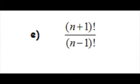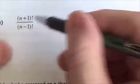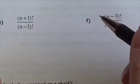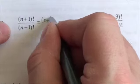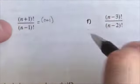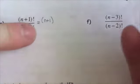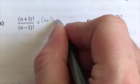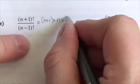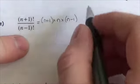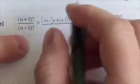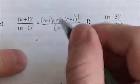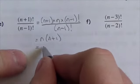Next: (n plus 1) factorial divided by (n minus 1) factorial. Clearly (n plus 1) factorial is larger, so expand it: (n plus 1) times n times (n minus 1) factorial, over (n minus 1) factorial. Those cancel, leaving n times (n plus 1), or n² plus n. Let's verify with n equals 4: 5 factorial divided by 3 factorial equals 5 times 4 times 3 factorial over 3 factorial, leaving 5 times 4 equals 20, and n² plus n gives 16 plus 4 equals 20. Correct.